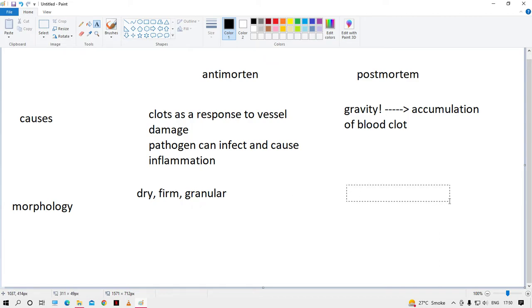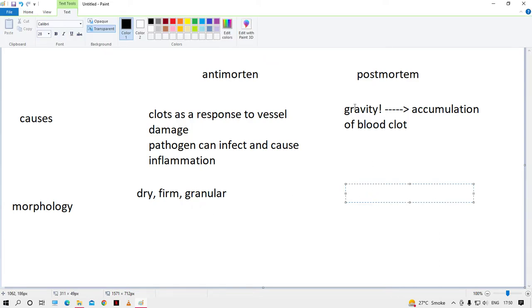In the living individual, clots are dry, firm, and granular. In the postmortem, these are not the normal clots. These will be really wet, shiny, gelatinous kind of clots, which would be soft and rubbery. Just imagine the blood is flowing and it just settled in a place—it will be gelatinous and soft because there's no compaction of that clot.